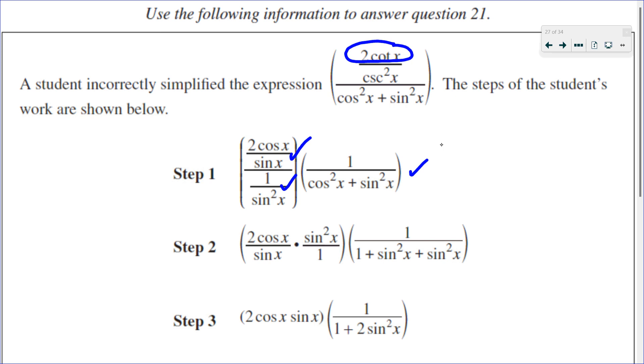Let's see what happens in step number 2. In step number 2, they're breaking this fraction apart. So they have 2 cos over sine X, and then they are multiplying, since we're dividing, multiplying by the reciprocal sine squared over 1. That's good. And then over here, it looks like they simplified cos squared to be 1 plus sine squared. I think that's where their mistake is.